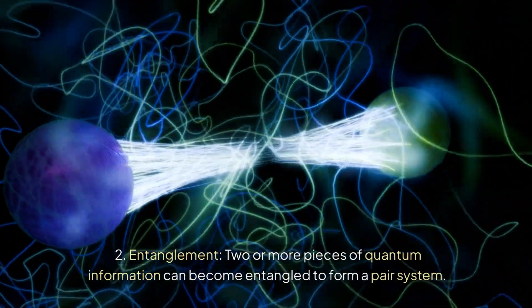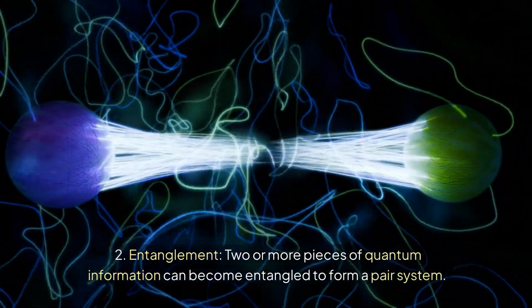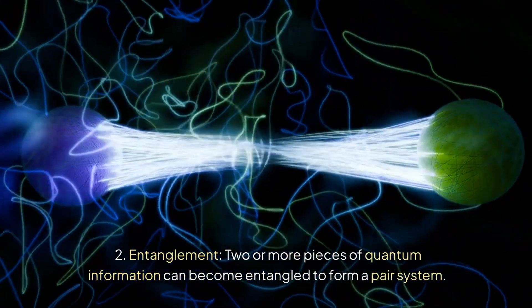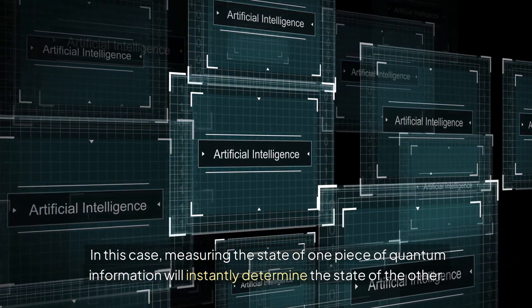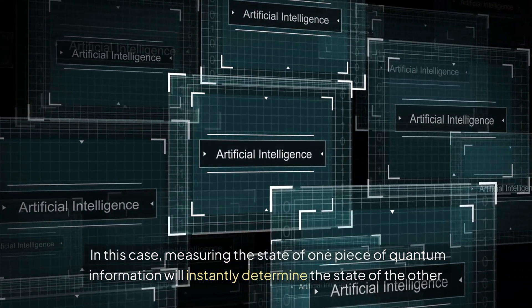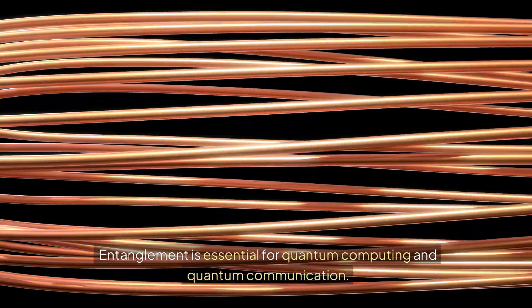Entanglement: two or more pieces of quantum information can become entangled to form a pair system. In this case, measuring the state of one piece of quantum information will instantly determine the state of the other. Entanglement is essential for quantum computing and quantum communication.